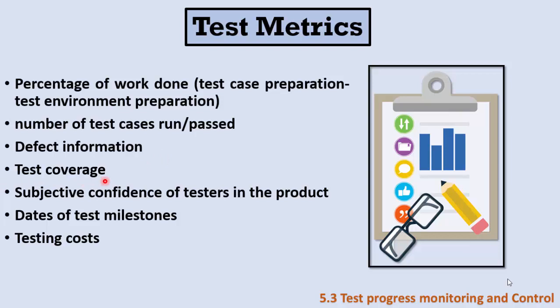Other key metrics include: test coverage — what percentage of the system is covered; the confidence of the tester in the product, since the tester is one of the people who best understands the system under test; the dates of test milestones — when we planned to finish testing; and the testing costs. These are among the most major examples of test metrics.